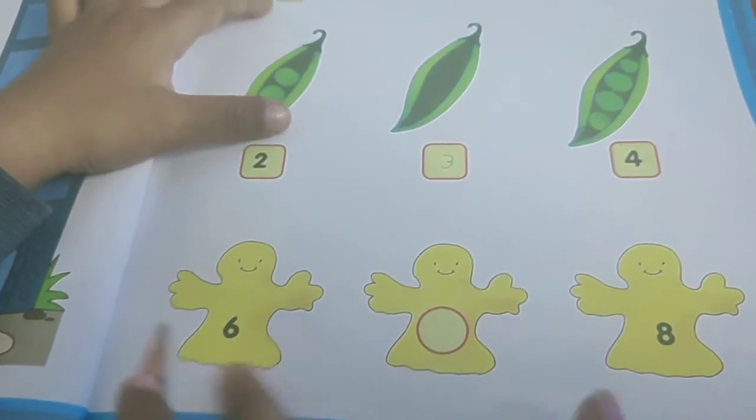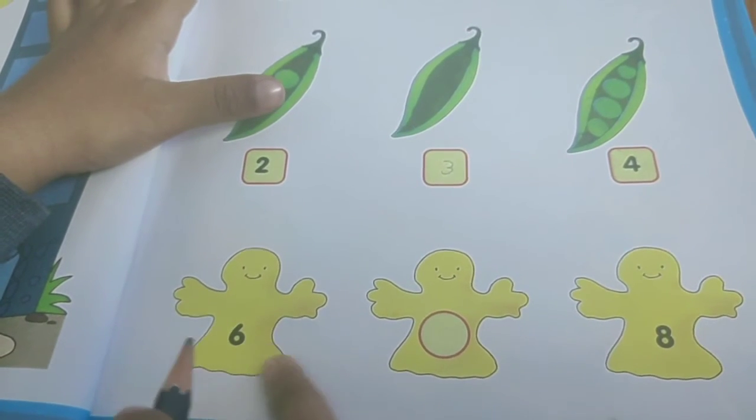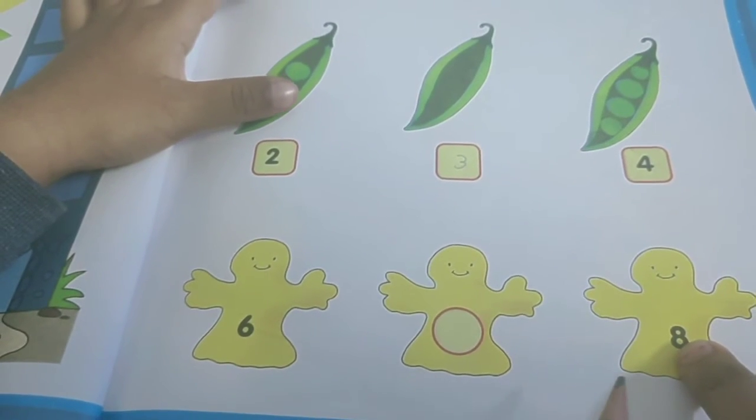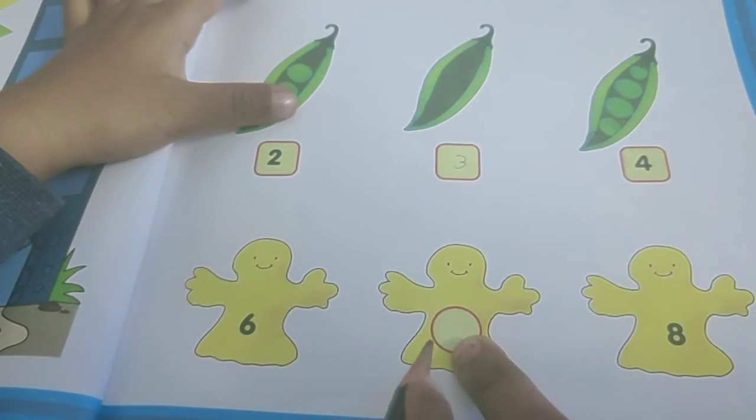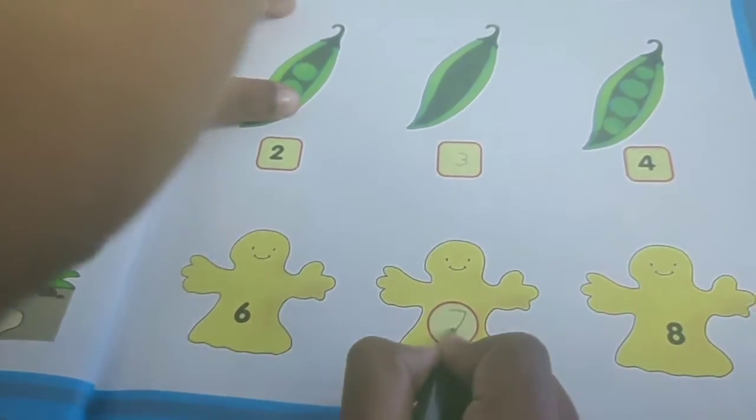Two, three, four, yes. Four, six, six, eight, what comes between?